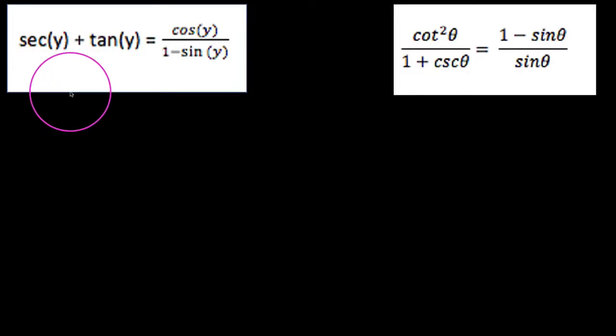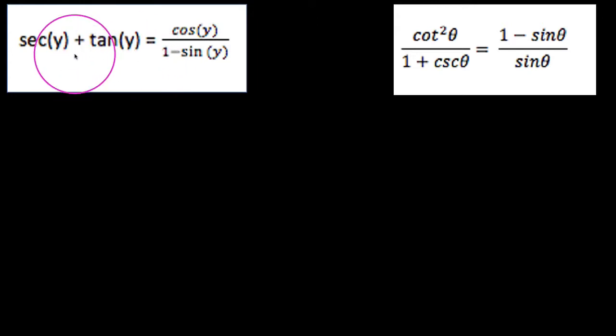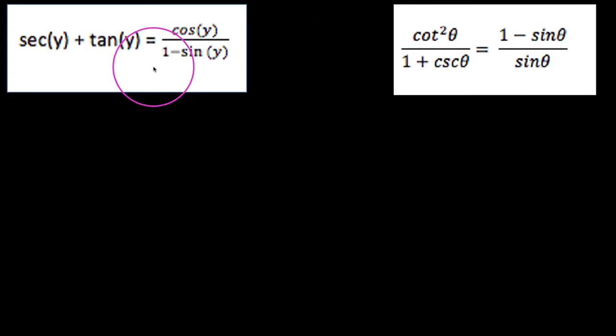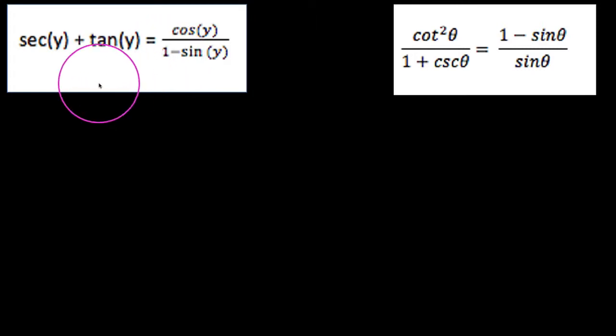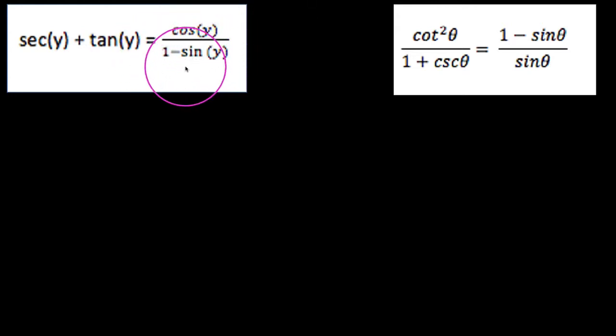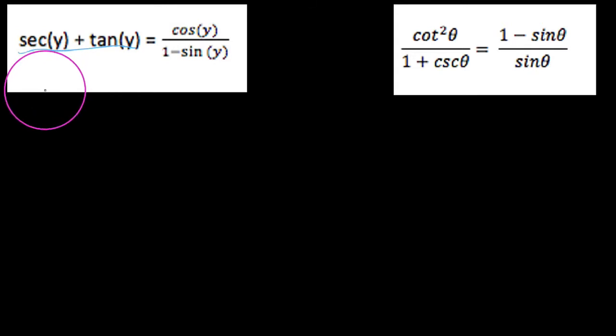Hey YouTube, this is my fourth video in my module on proving trig identities. In this video we're going to focus on instances where we want to work on both sides of the identity — not at the same time, but essentially to build a bridge from one side to the other to prove that they are indeed equal. We're going to use all sorts of different techniques, specifically multiplying by a conjugate of a denominator.